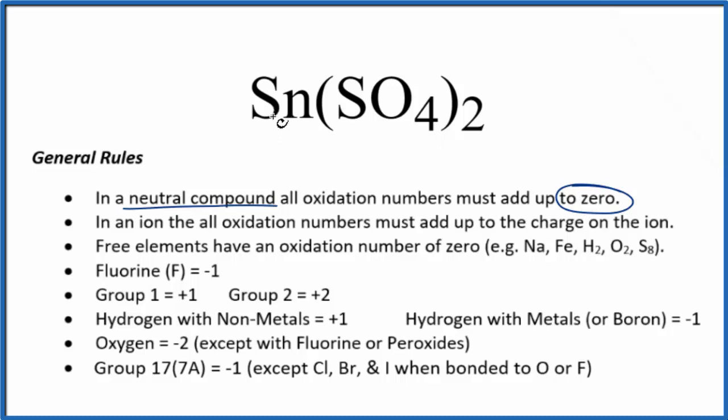Tin is a transition metal, so it can have different oxidation states depending on what it's bonded to. Here it's bonded to this sulfate ion. This is a polyatomic ion, and it has an ionic charge of 2-. And we have two of these sulfate ions bonded to the tin.